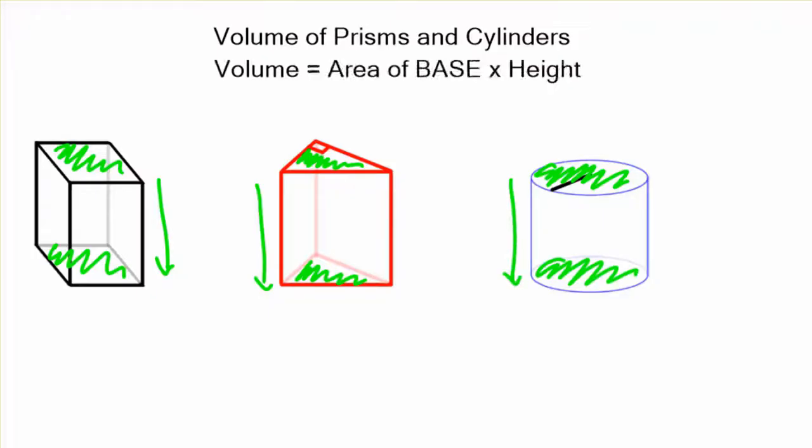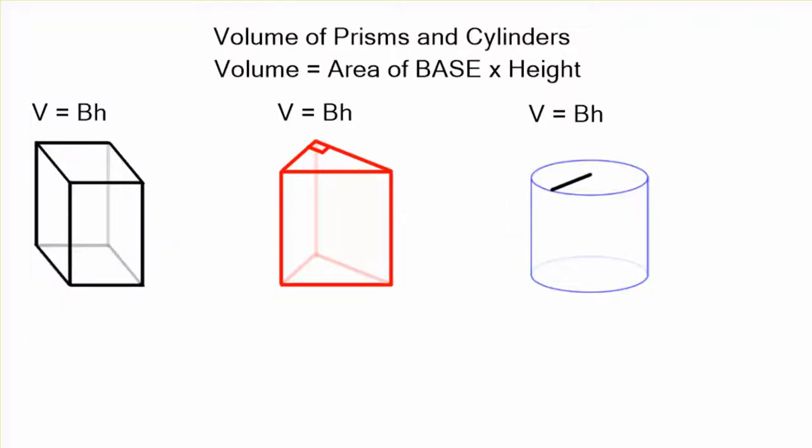It's going to be the area of those bases times the height of the figure. They're all going to have the same formula: volume equals the big B base, area of your base, times the height of the figure.